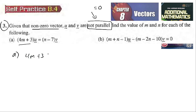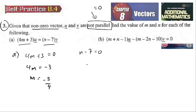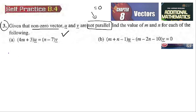So m plus three is equal to zero, which gives m equal to negative three. And this one is also equal to zero, so n is equal to negative three over four. And n minus seven is equal to zero, so n is equal to seven.